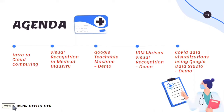Here is the agenda: first, we'll cover cloud computing and its use cases, then visual recognition and its role in the medical industry. We'll use Google Teachable Machine to detect masks, IBM Watson Visual Recognition to detect masks and brain tumors in brain scan reports, and finally Google Data Studio to analyze COVID cases. Quite interesting — let's get started!